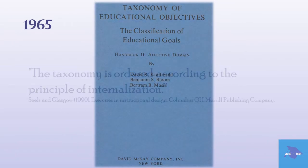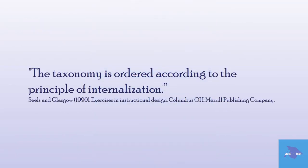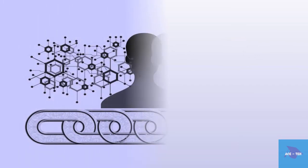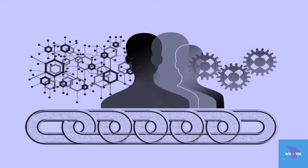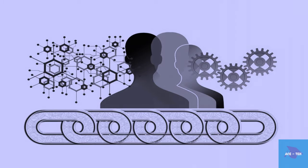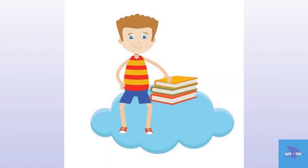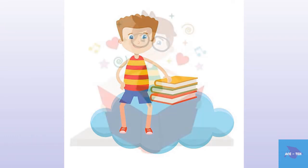As Seals and Glasgow point out, the taxonomy is ordered according to the principle of internalization. Internalization is a process where a person moves from a general awareness of a topic to where the change is internalized and guides the character or behavior of the person. The affective domain is generally covered in behavior — that is, they are not openly acknowledged or displayed. The educational objectives vary from something as simple as providing attention to a topic, to qualities of character and conscience.